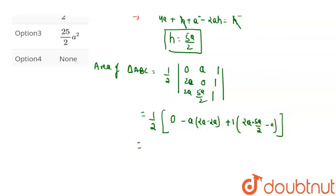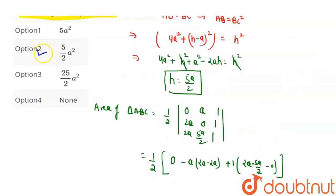Which equals one by two. The first term becomes 0, then we get 5a square by 2 into 2. Which equals 5a square by 2. Therefore, option 2 is correct.